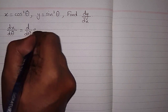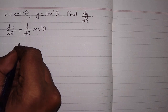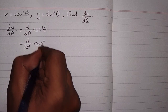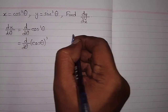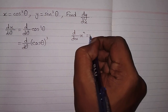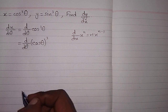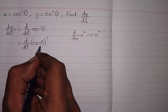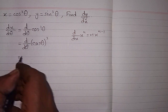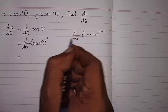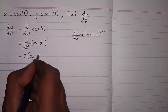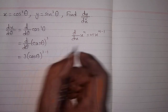We have d by d theta of cos cube theta, which can be written as d by d theta of cos theta raised to the power 3. Now we can use the power rule of differentiation: d by dx of x to the power n is equal to n times x to the power n minus 1. Here the power is 3 and cos theta is in place of x, so this power 3 will become the coefficient.